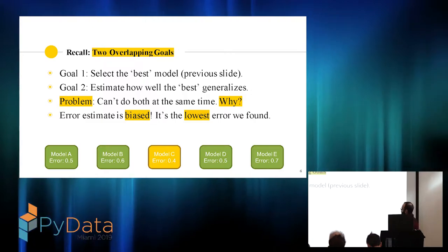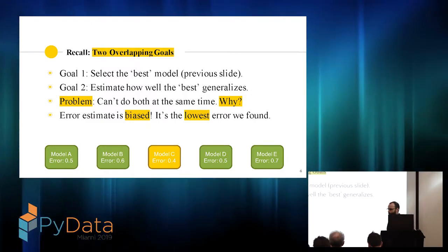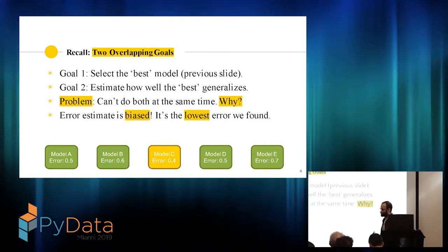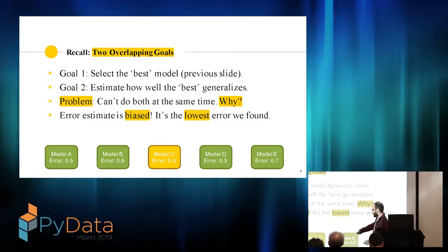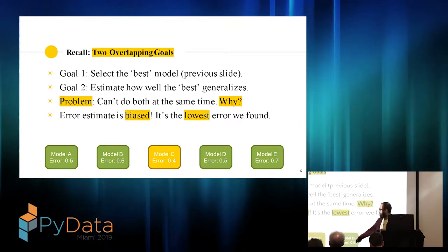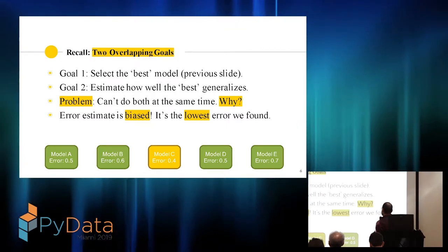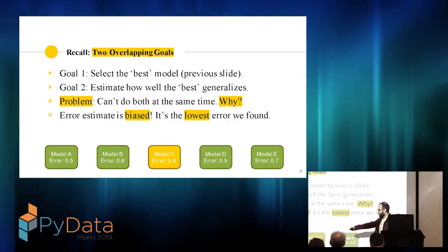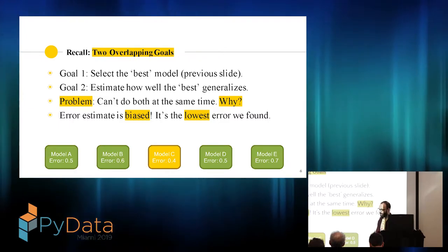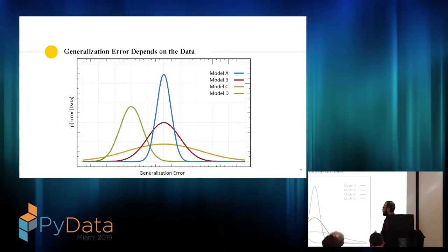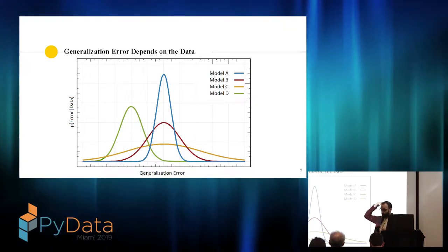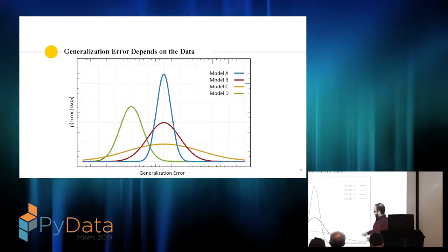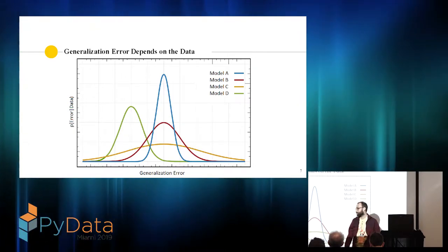Now you run into a little problem: the 0.4 error is actually not a good estimate of how good that model is. We have to recall what our goals are. The first goal — select the best model — we just did, and what I showed is a completely legitimate way to select a model. The problem is we want to estimate how well the best model generalizes, and we can't do both at the same time. The reason the error estimate is biased is that it's the lowest error we found — we took the minimum. To understand that, we have to think of generalization error as a random variable.